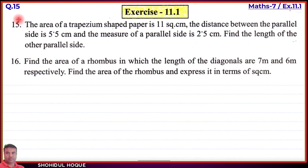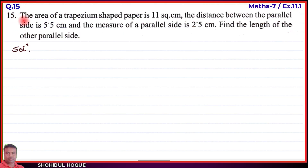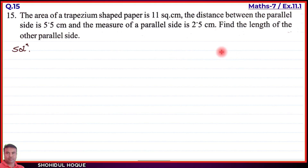Question number 15: The area of a trapezium-shaped paper is 11 square centimeters. The distance between the parallel sides is 5.5 centimeters and the measure of one parallel side is 2.5 centimeters. Find the length of the other parallel side.